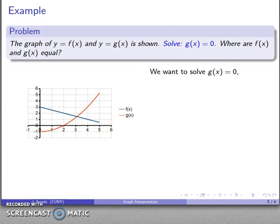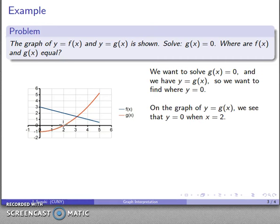I want to solve g(x) equal to zero, and I have the graph of y equals g(x). So that says I want to find where y is equal to zero. Let's see, that's right, this is the graph f(x). I want to find y equals g(x), so that's this red graph. Right at this point is where our y value is zero. That says that y is equal to zero when x is equal to two, and there's our solution.